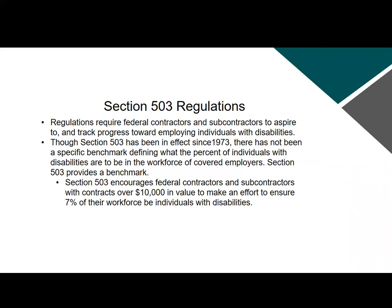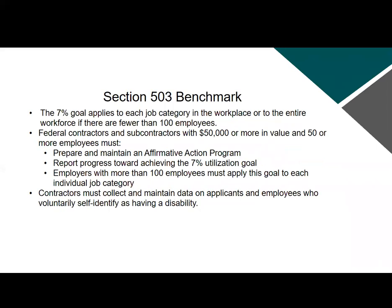Section 503 encourages federal contractors and subcontractors with contracts over $10,000 in value to make an effort to ensure seven percent of their workforce are individuals with disabilities. That seven percent goal applies to each job category in the workplace, or the entire workforce if there are fewer than 100 employees. Contractors with $50,000 or more in contract value and 50 or more employees must prepare and maintain an affirmative action program, report progress toward achieving the seven percent goal, and employers with more than 100 employees must apply this goal to each individual job category.